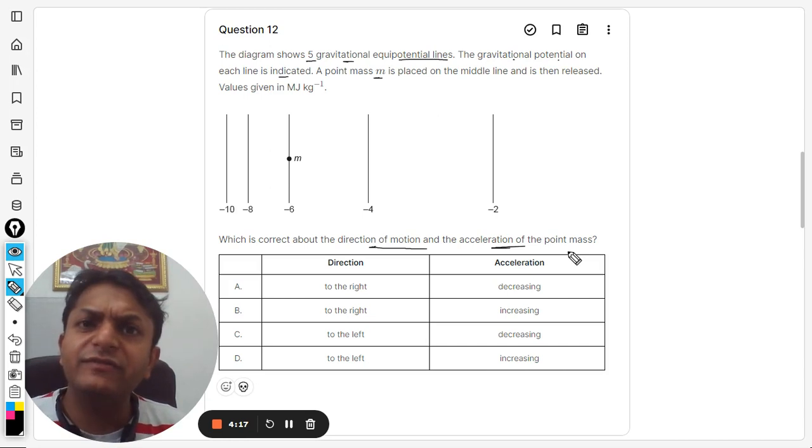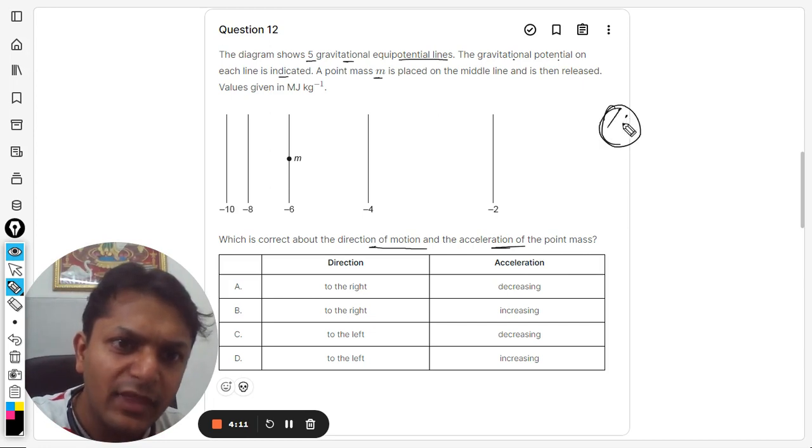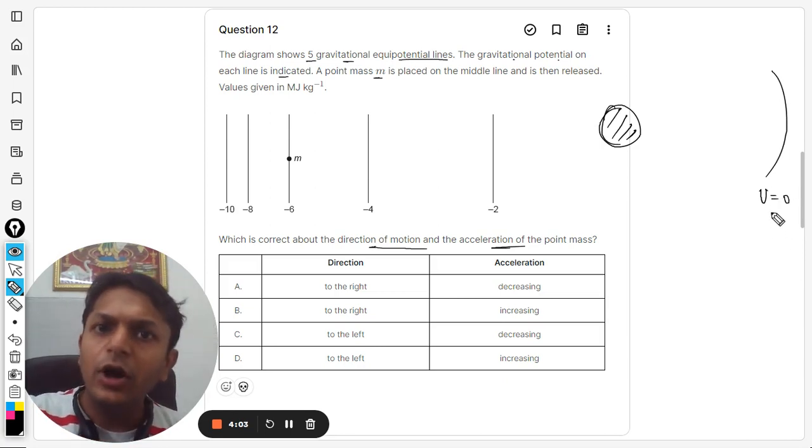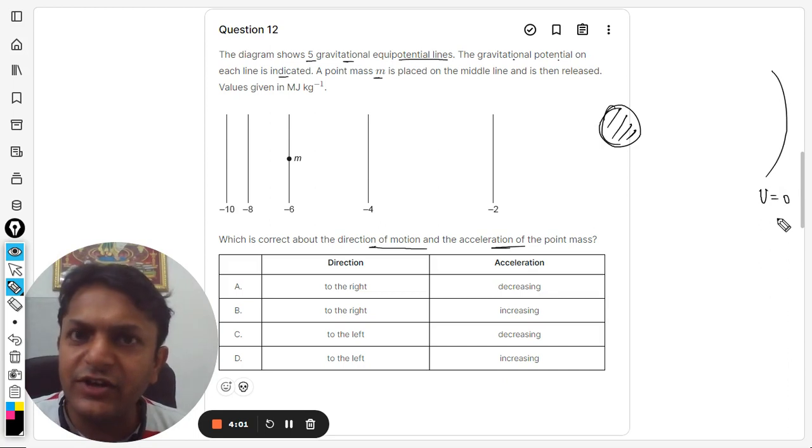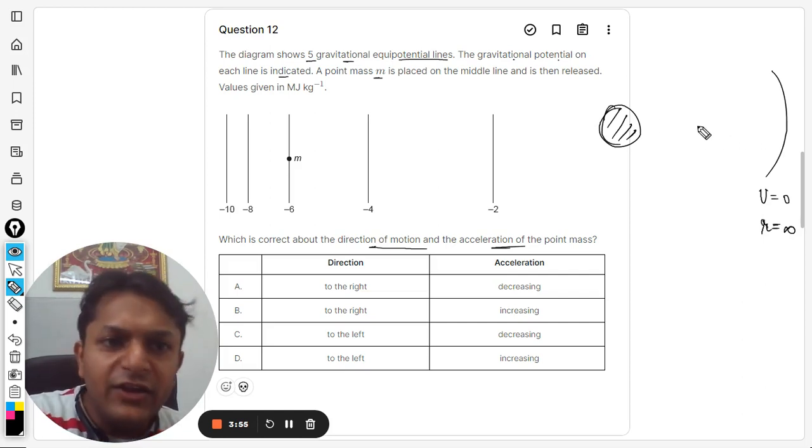And in the case of gravitation, the potential value is always negative. So these are a couple of things that you need to remember. Let's say this is the planet or this is the Earth. So at infinite distance, the potential will always be taken as zero. It's just a reference point that we create; it is always zero. The distance is infinite.